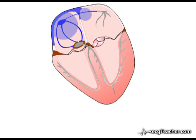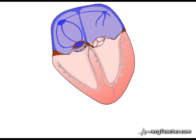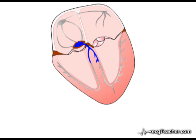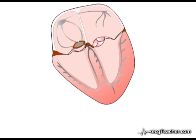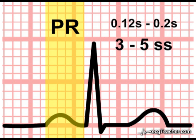Atrial depolarisation is transmitted to the ventricular myocardium by the AV node and intraventricular conducting system. The time between the onset of atrial depolarisation and the release of depolarising current into the ventricular myocardium from the terminal branches of the conducting system is represented by the PR interval on the ECG.